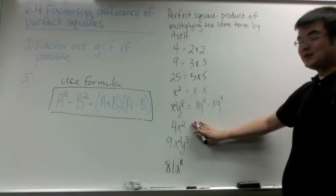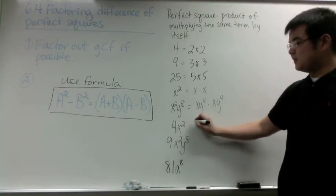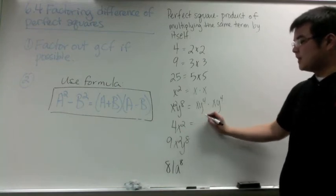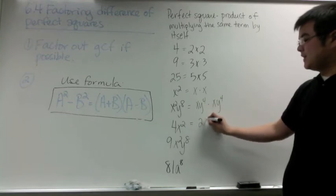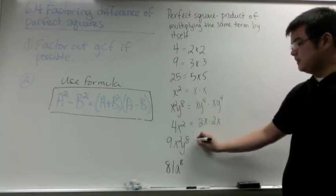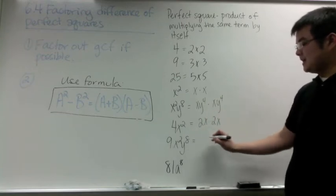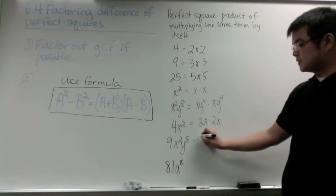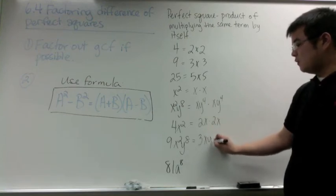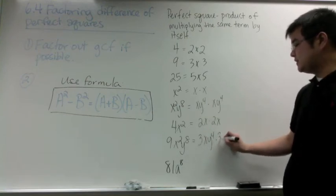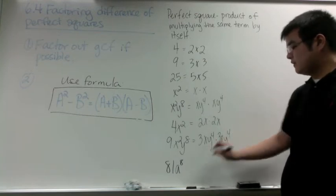Now we're going to move on to the combination of a number and a variable. 4x squared is a perfect square because of 2x times 2x. 9x squared y to the 8th is a perfect square because of 3x y to the 4th times 3x y to the 4th.